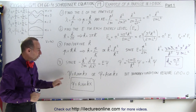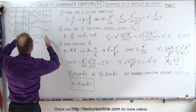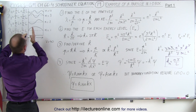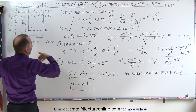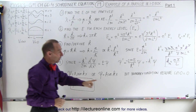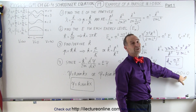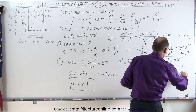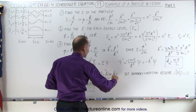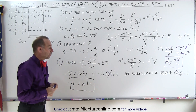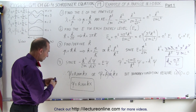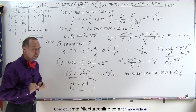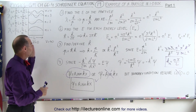However, there's a problem with one of these two solutions. The boundary conditions require the wave function to equal zero at x equals 0 and x equals L. The cosine of zero is not equal to zero, so cosine of kx is not a viable solution. Therefore, the sine function is the correct representation: the wave function for a particle in a one-dimensional box is A times sine of kx.